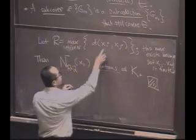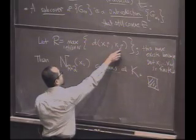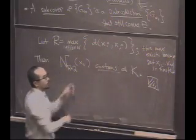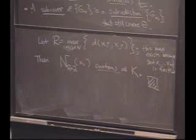Actually, in this proof, I didn't even need xi, xj, did I? I could have replaced this by what? x1, xj. I'm going to take that maximum. All right. Everybody happy?